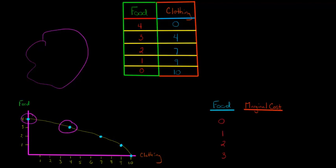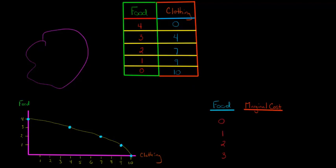For example, if you were to produce four units of food, that would mean zero units of clothing. Three units of food would give you four units of clothing. These are the following combinations, and we plotted them all out with our PPF.